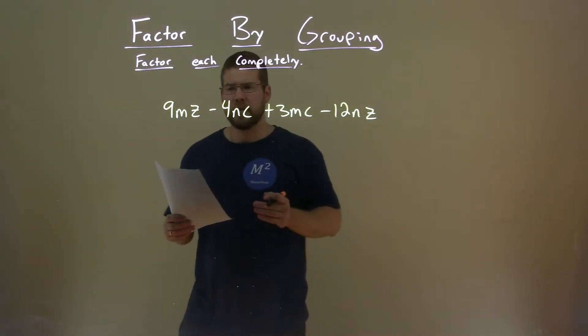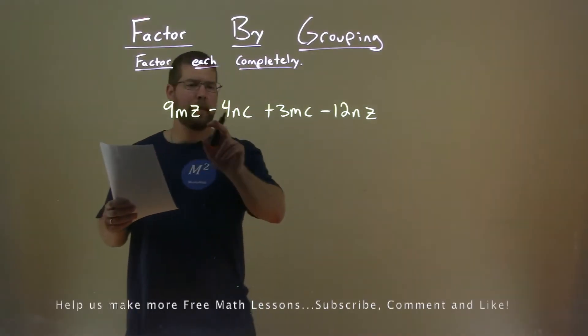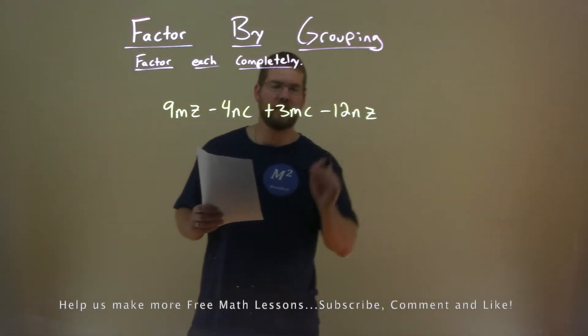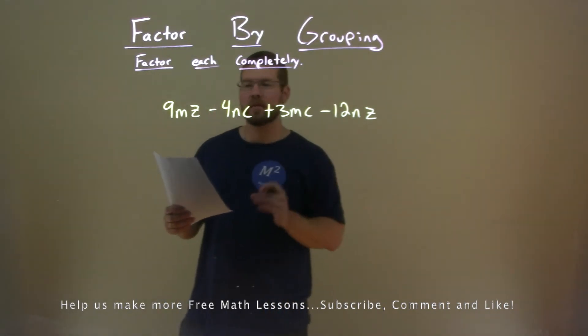We're given this problem right here: 9MZ minus 4NC plus 3MZ minus 12NZ, and we want to factor this completely.